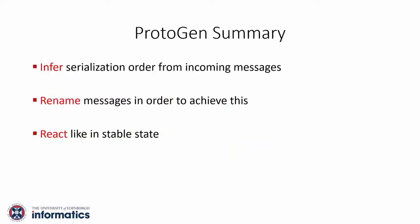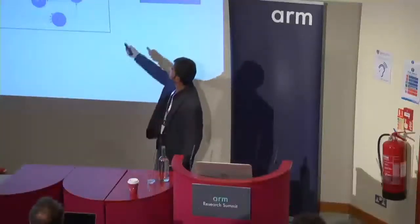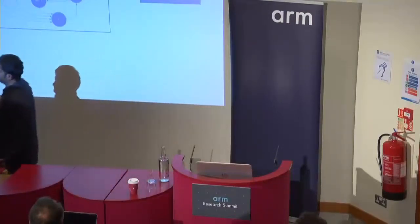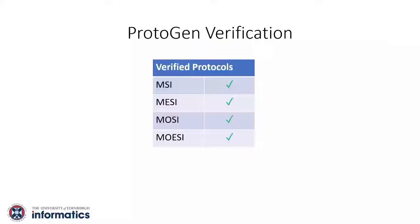To summarize the key insight: we need to infer the serialization order by looking at the incoming message, and optionally we might need to rename messages to guarantee this. Then we react as if in a stable state. Our tool has a front end — our own domain-specific language for writing stable state or atomic protocols — and then Protogen, acting as a compiler, automatically produces a highly concurrent protocol in our own intermediate format. We could have different back ends for Slick, Verilog, or whatever is needed. Currently we have a back end for Murphi, a model checker for coherence protocols, so we can verify correctness. We have tried MSI, MESI, MOSI, and MOESI protocols and verified them in Murphi for safety and deadlock freedom.